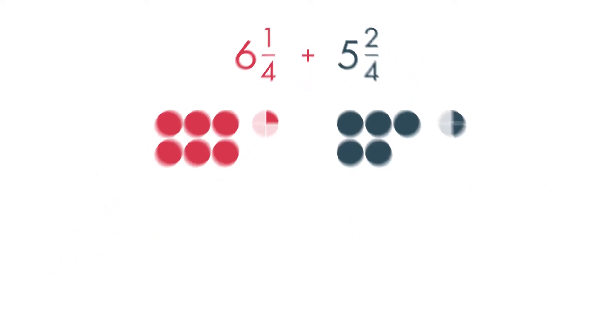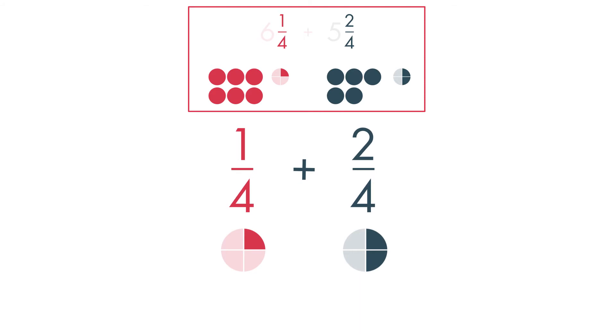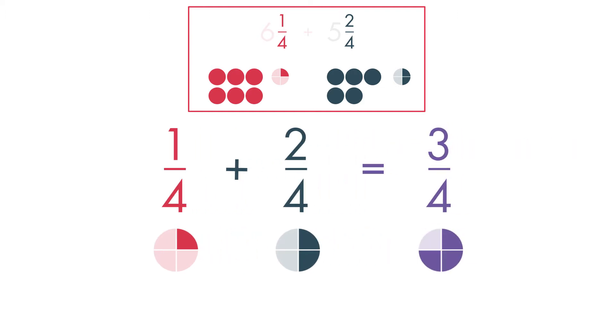When adding mixed numerals, first add the fractions. Add the numerators. The denominator will stay the same. One-fourth plus two-fourths equals three-fourths.